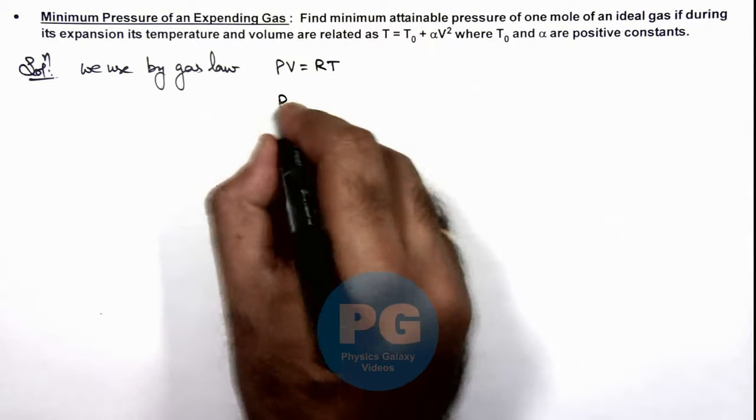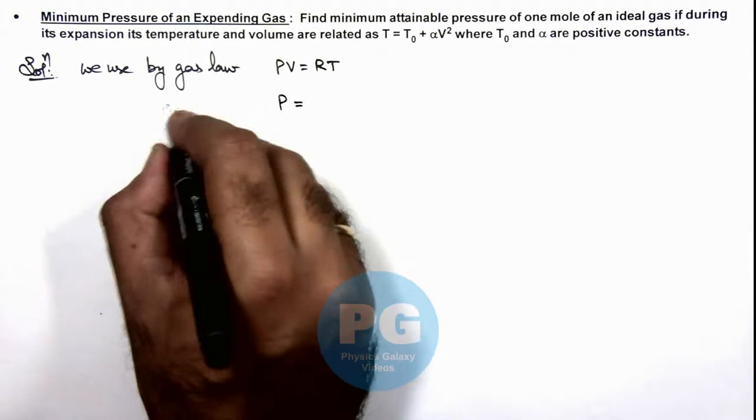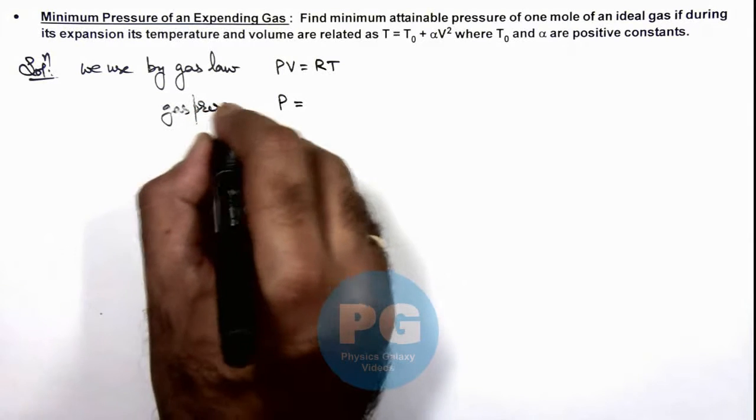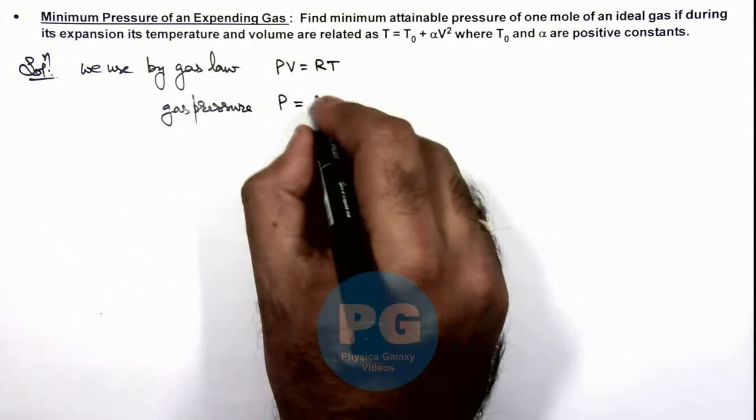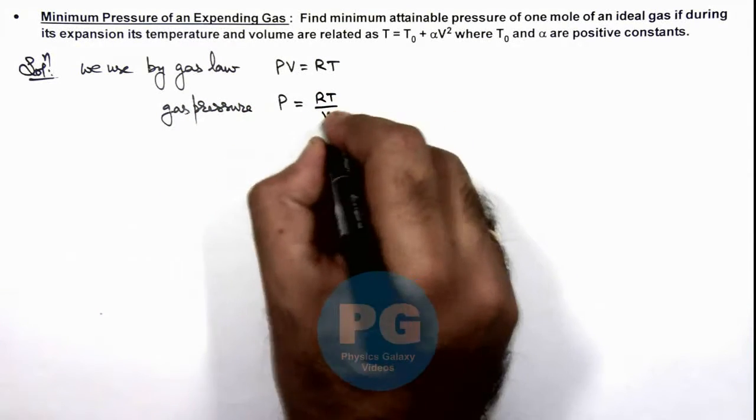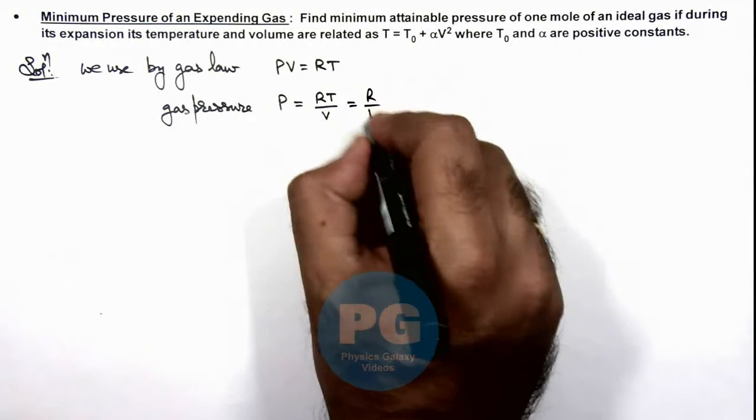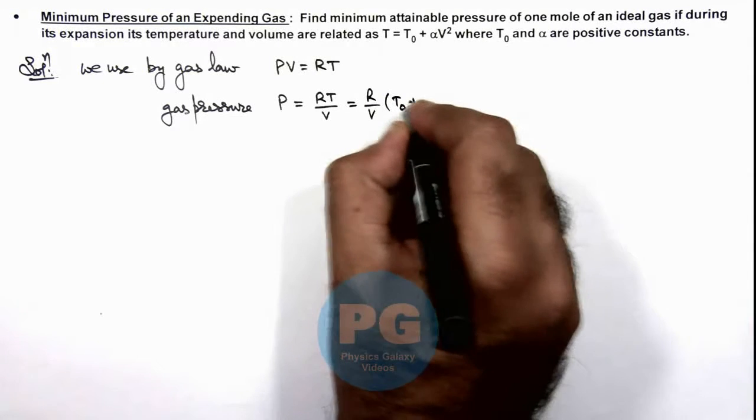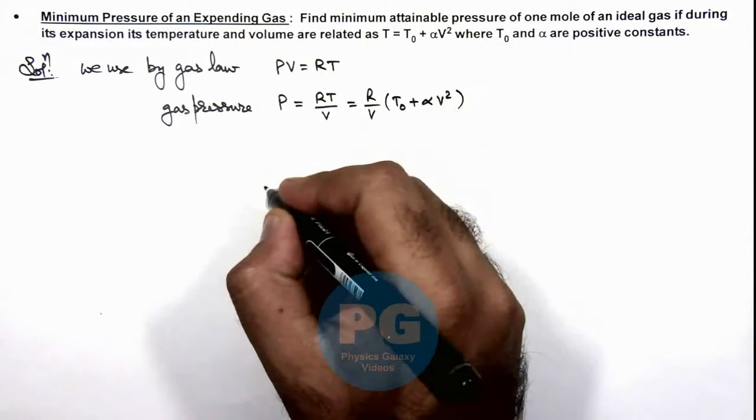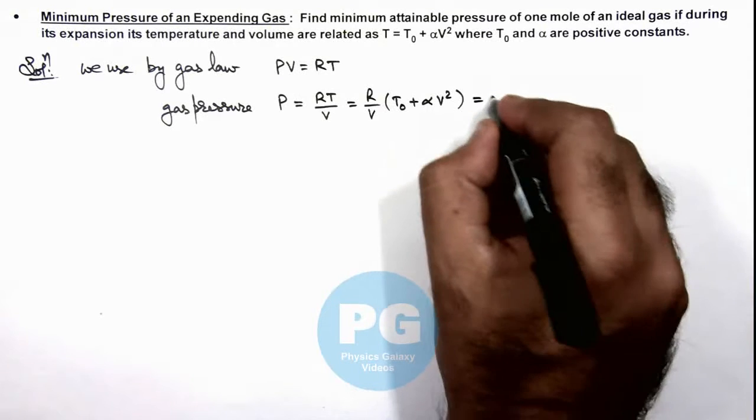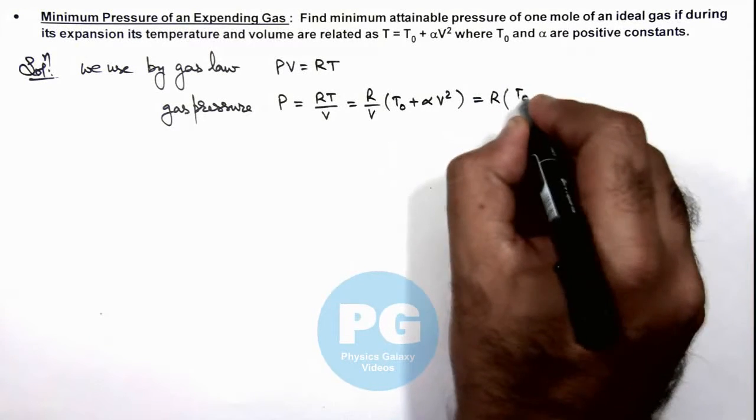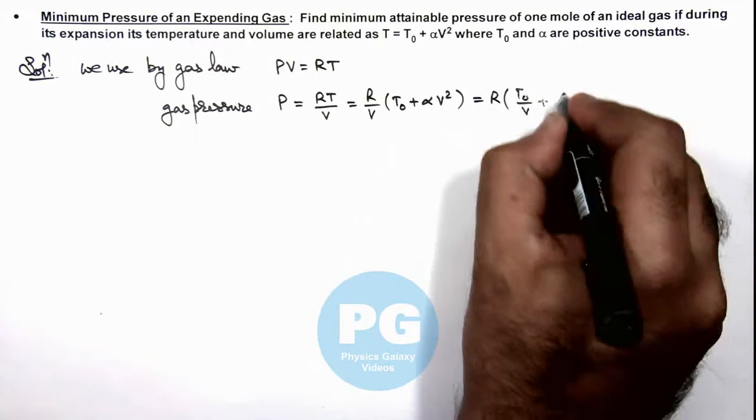The gas pressure can be given as P = RT/V. If we substitute the value of T, this is R/V multiplied by (T₀ + αV²), which is written as RT₀/V + αV.